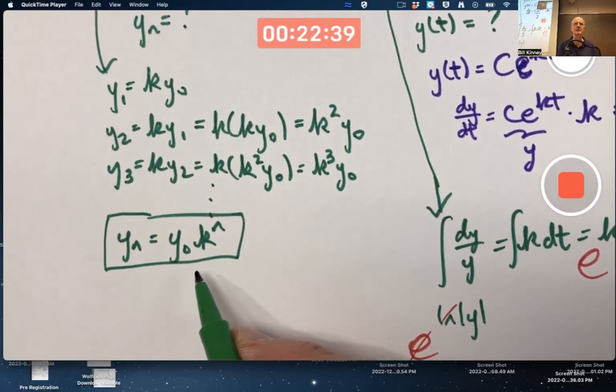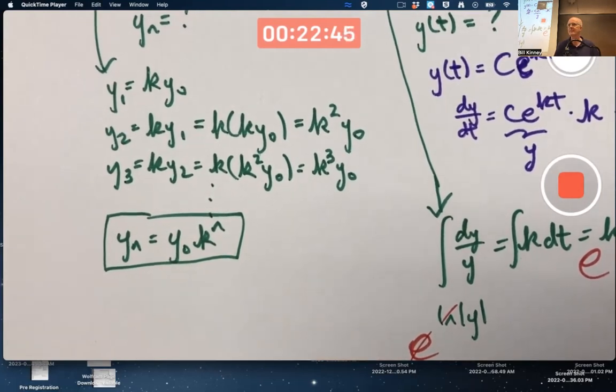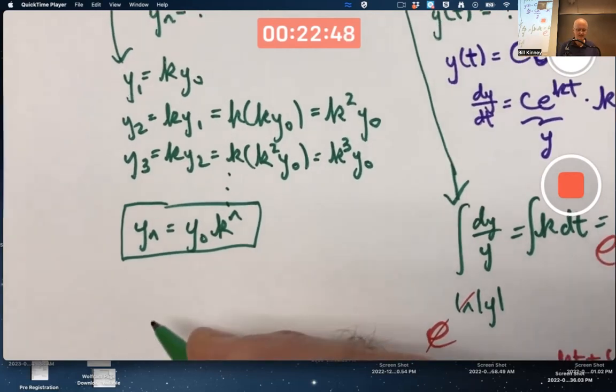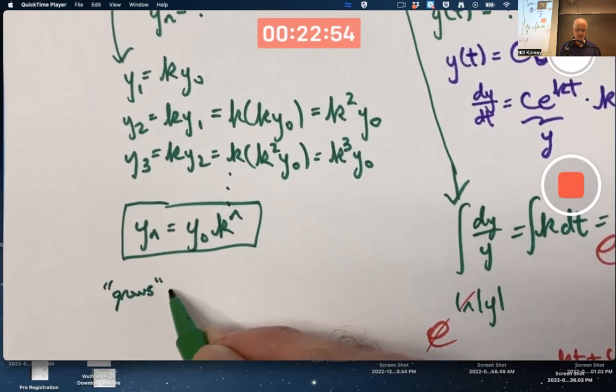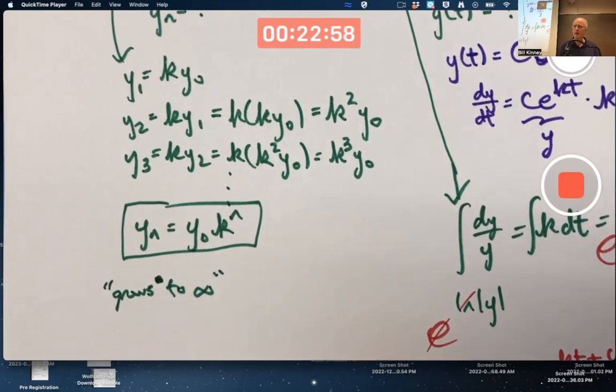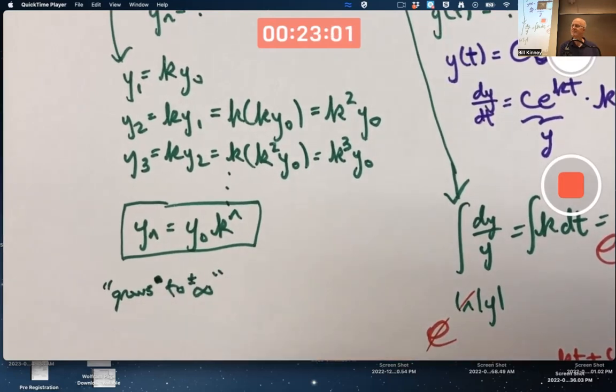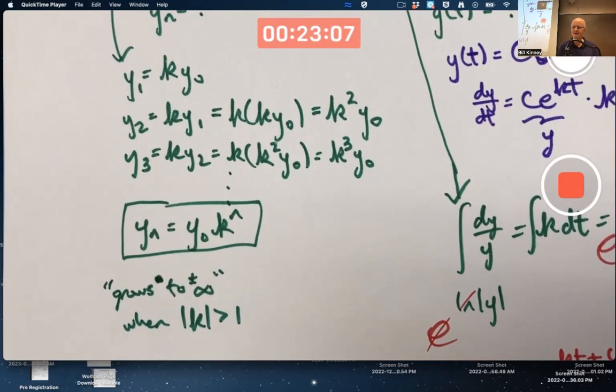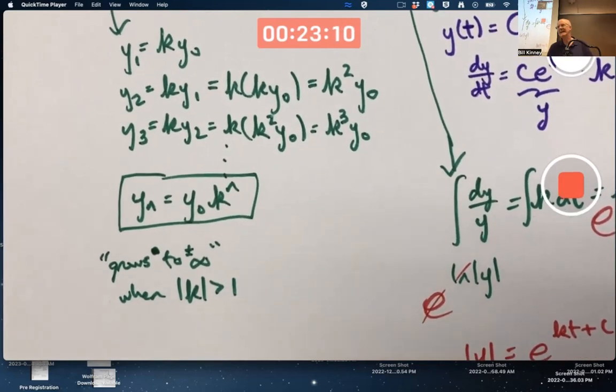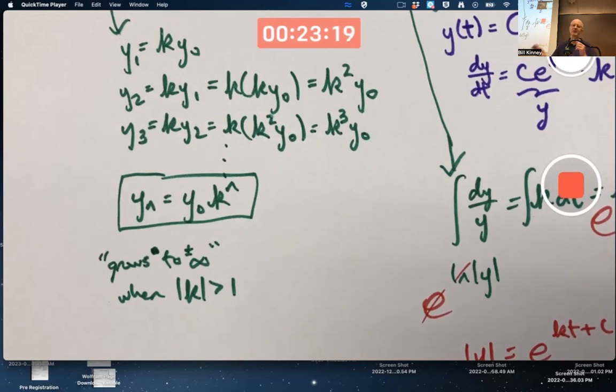When would this grow to infinity so to speak? What values of k would lead to this growing as n grows? It's a function of n. You're right. This grows, well, to infinity or maybe I should put plus or minus infinity when the absolute value of k is bigger than one. That's correct. That's easier to think about if you just say k is bigger, k itself is bigger than one. But it actually does grow, explode off to infinity even if k is less than negative one, like negative two, for example.